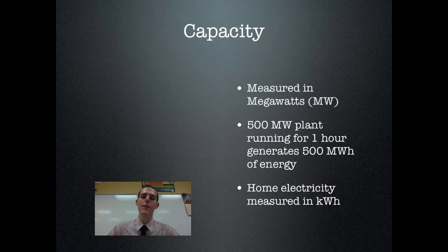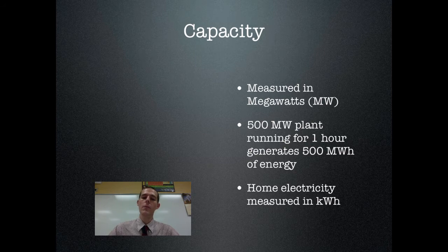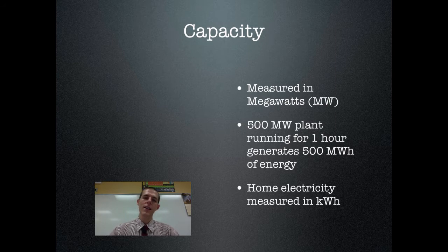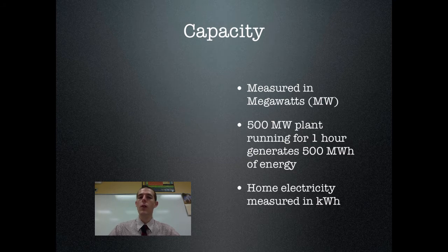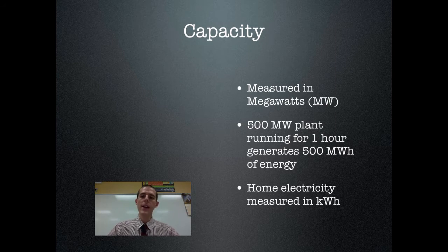The next thing to know about electricity generation is the idea of capacity — basically how much electricity a power plant can produce. Power plants are measured in megawatts, which is the sheer capacity being output. A typical power plant is around 500 megawatts. If you run it for one hour, it generates 500 megawatt-hours of electricity. On your home energy bill that's measured in kilowatt-hours, and there are 1,000 kilowatt-hours in a megawatt-hour — you'll notice your bill is listed in KWH.